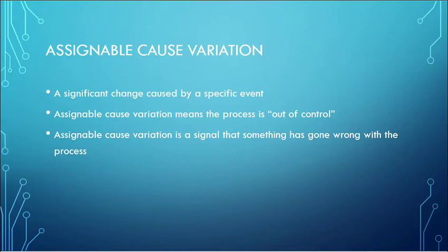Assignable cause variation is a signal that something has gone wrong. Something isn't going the way we expected with the process. So assignable cause variation is something that we need to investigate and eliminate.